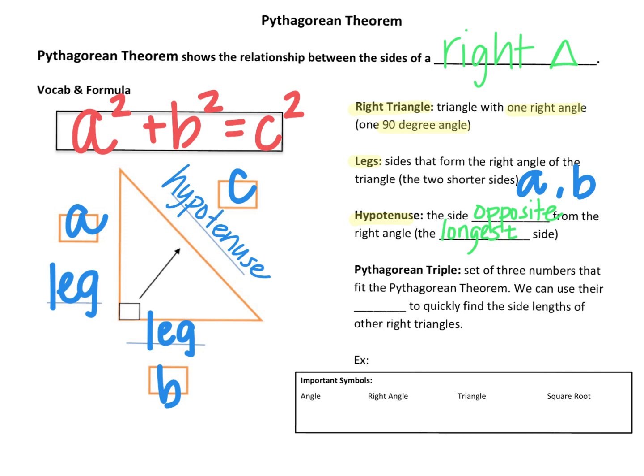There's one other important vocabulary word for you to know, and this is a Pythagorean triple. A Pythagorean triple is a special type of right triangle. It's a set of three numbers or three side lengths that fit the Pythagorean Theorem. We can use their ratio to quickly find the side lengths of other right triangles. An example of a Pythagorean triple is a right triangle with side lengths 3, 4, and 5. We can use the ratio of these side lengths to know that if we have a right triangle with side lengths 6 and 8, the hypotenuse must be 10. We will look at a few examples of Pythagorean triples on the following page.